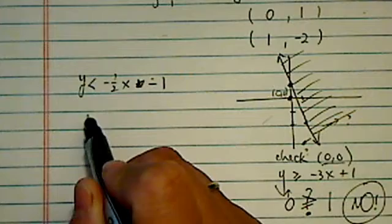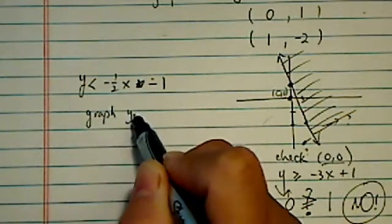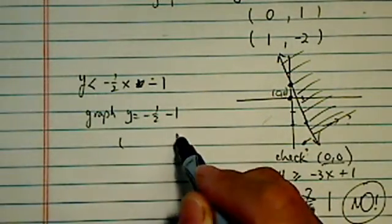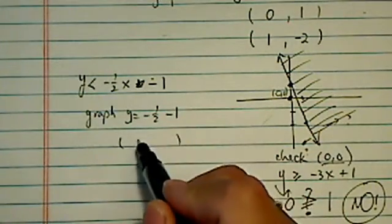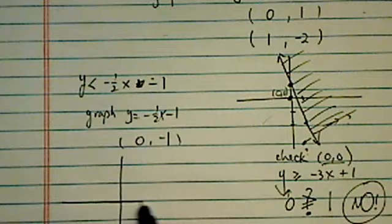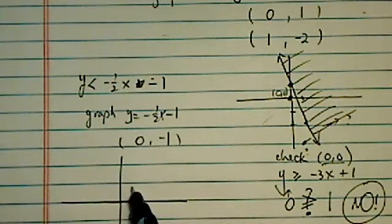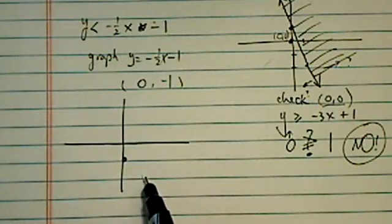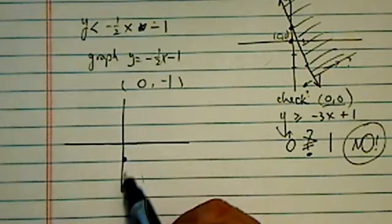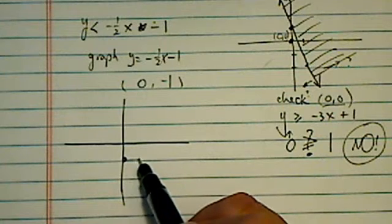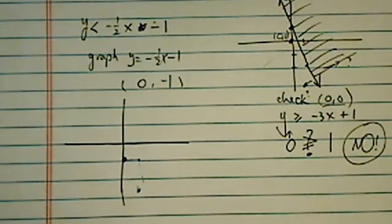Once again, I'm going to graph the line first: y = -½x - 1, and this time I'm going to use the point and slope method. When x = 0, y is -1, so here is my point. The slope -½ means it goes over 1 and down 2. So over 1 and down 2, there's my point.